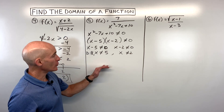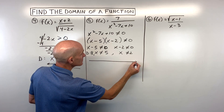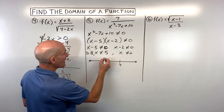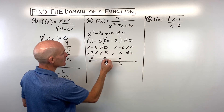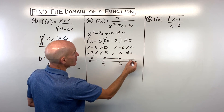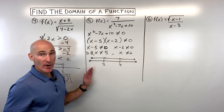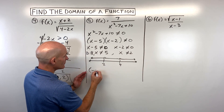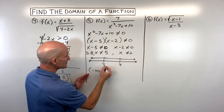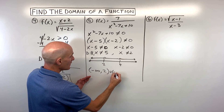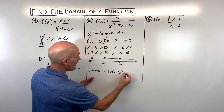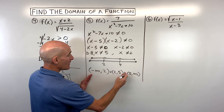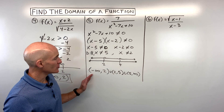So our domain: we could say it's all real numbers but x can't be five and x can't be two. In interval notation, it can't be two, it can't be five, but it can be everything else. Working from left to right: from negative infinity up to two, not including two; then from two to five; then from five to positive infinity — and that's your domain in interval notation.